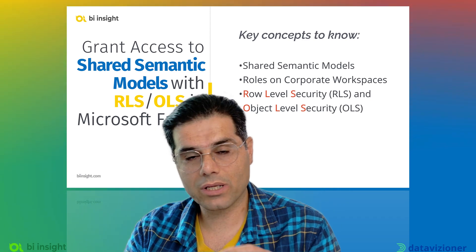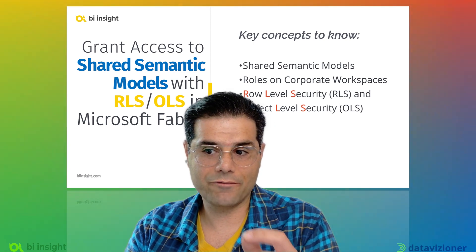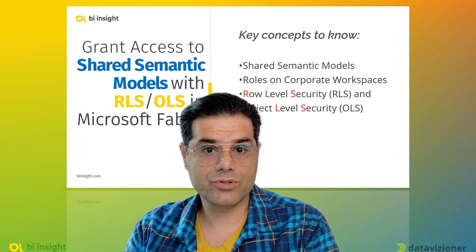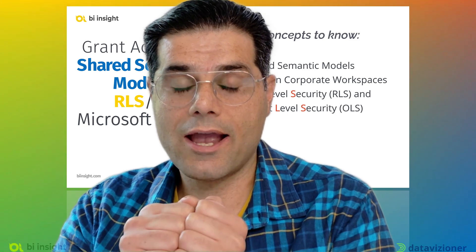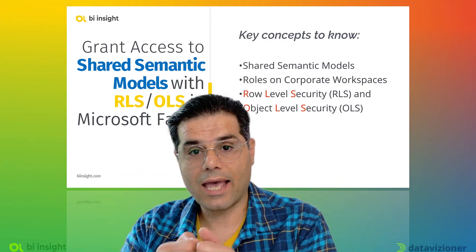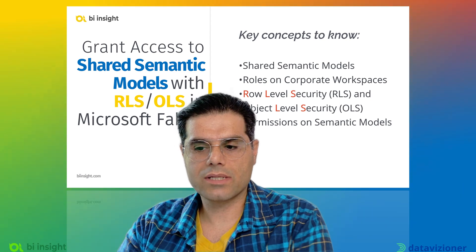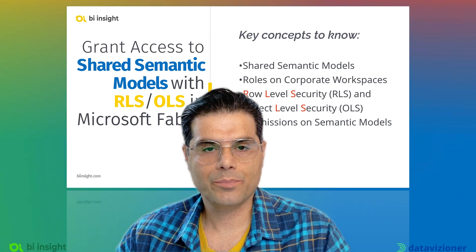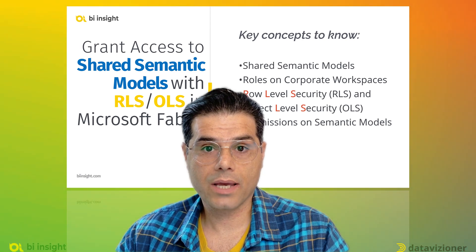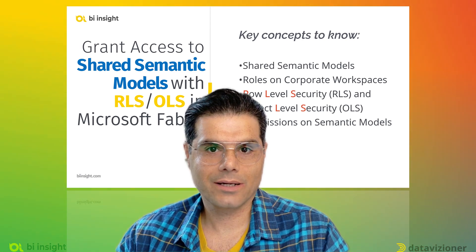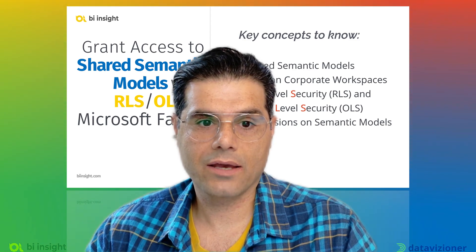Here's the critical point: both row-level security and object level security only kick in for users who have viewer rights on a workspace. If you assign a user or security group as a contributor role on a workspace, they will have access to everything in the semantic model — all data and all objects. That is exactly what we do not want.